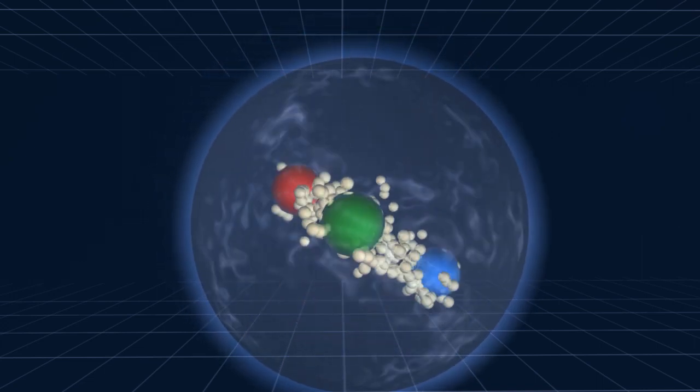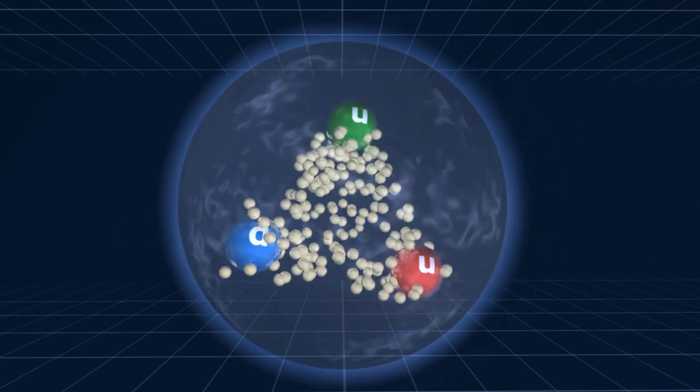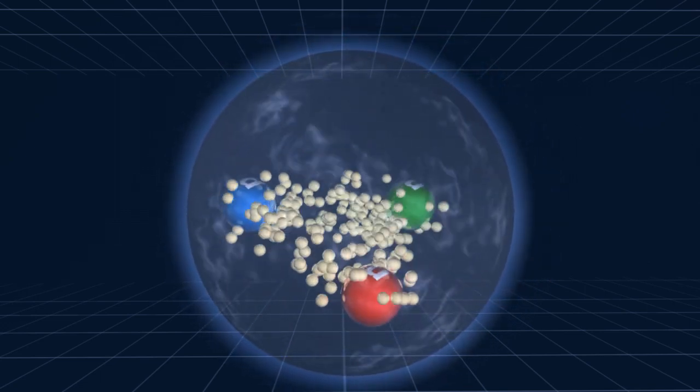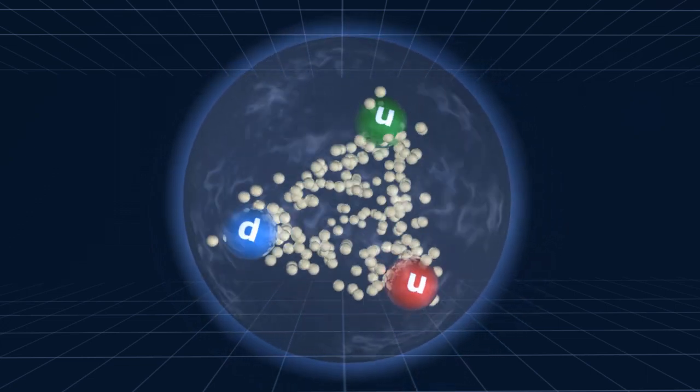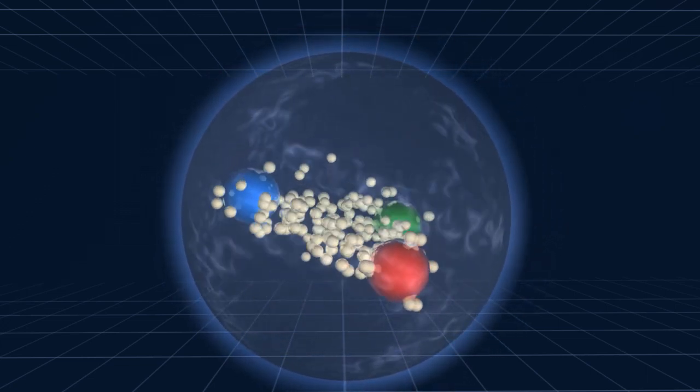The quarks are kept together by a number of gluons interacting with the quarks and also with the other gluons. Gluons give rise to the gluon field that keeps the constituents of the proton together.